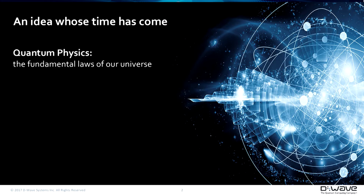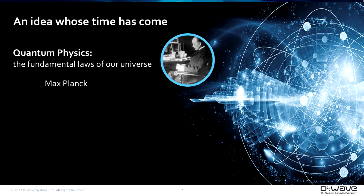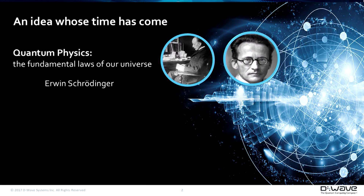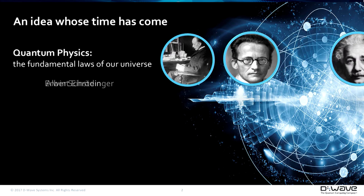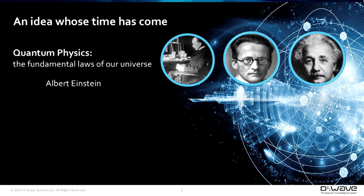The ideas behind quantum physics started appearing about 150 years ago with Max Planck and Schrodinger — and I'll come back to him in a minute. I see some folks nodding, so they know of his cat. And even Albert Einstein laid some of the mathematical foundations for what we're doing today. However, Einstein didn't believe in all of the quantum stuff.